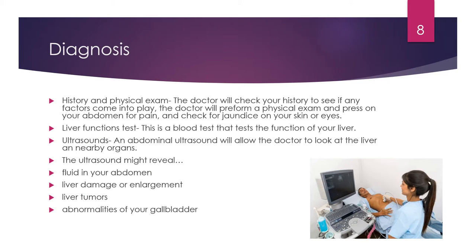To diagnose hepatitis, one method is history and a physical examination. The doctor can pull your history and family history to see if there are any risk factors for infectious or non-infectious hepatitis. They will also do a physical examination, pressing gently on your abdomen to check for pain or tenderness, and feeling to see if your liver is enlarged or if your skin or eyes are yellow.